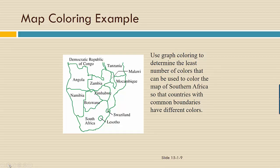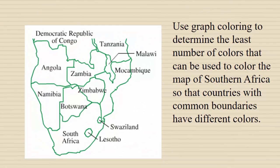In the previous video, we discussed colorings of graphs. In this video, we're going to use graph coloring to determine the least number of colors that can be used to color the map of South Africa so that countries with common boundaries have different colors.